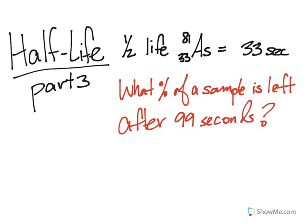So to do this type of problem, let's go ahead and read this first. The half-life of arsenic-81 is 33 seconds, and we want to know what percentage of the sample is left after 99 seconds.